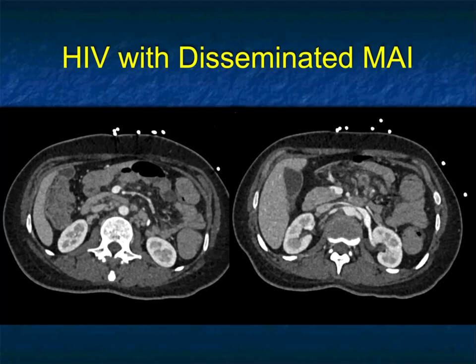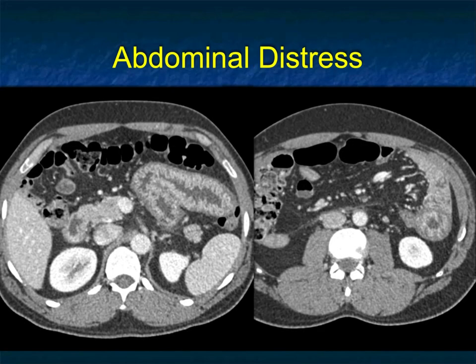So MAI and TB — infectious etiologies — can be a real difficult diagnosis because you surely have to think about malignancy. But I think when you have the low-density nodes in a patient who has no primary diagnosis or no diagnosis of malignancy, you've got to be thinking about MAI.